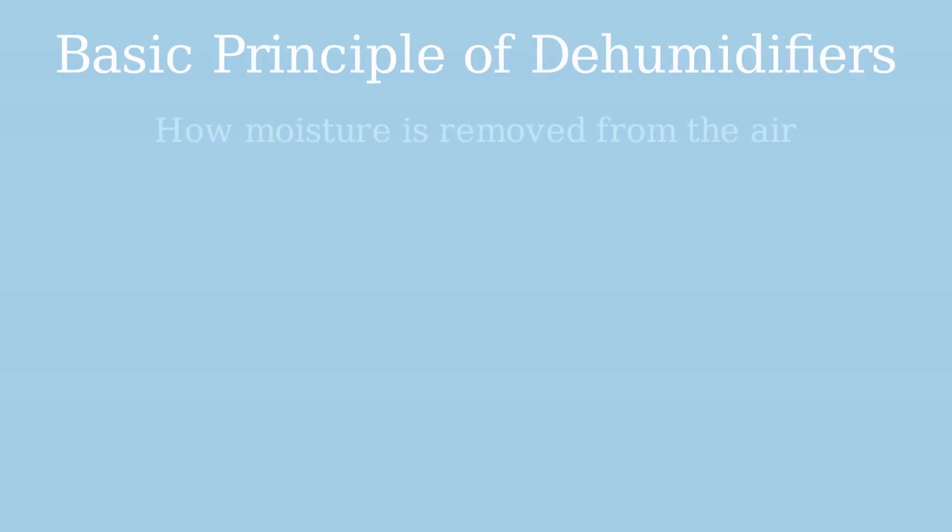Dehumidifiers work on a simple principle, extracting moisture from the air to reduce humidity in enclosed spaces. In a typical indoor environment, air contains moisture in the form of water vapor. When this moisture level is too high, exceeding 50% relative humidity, problems can arise.